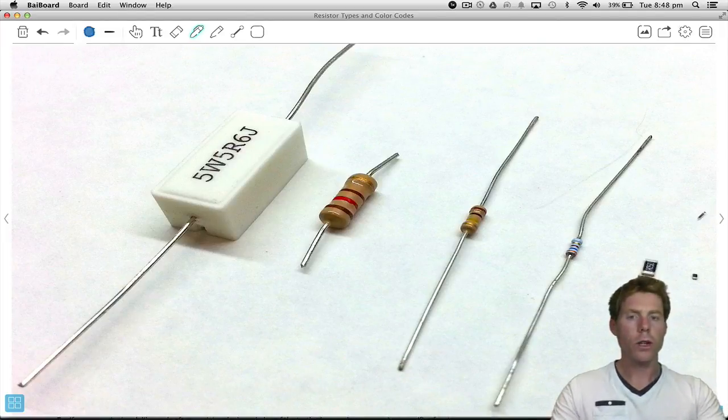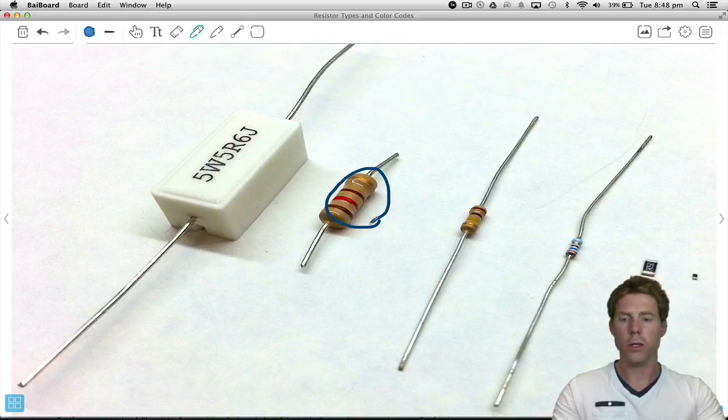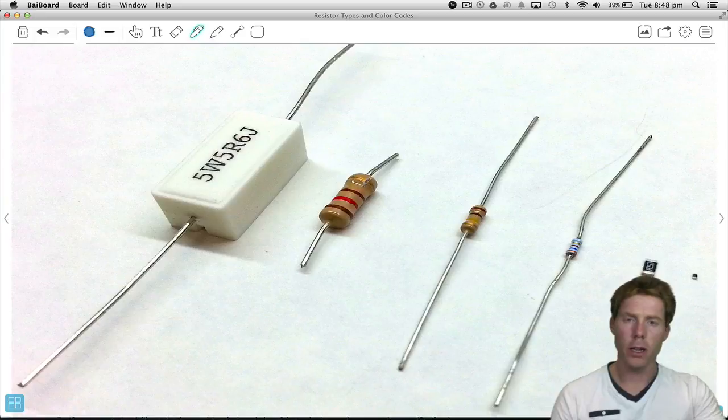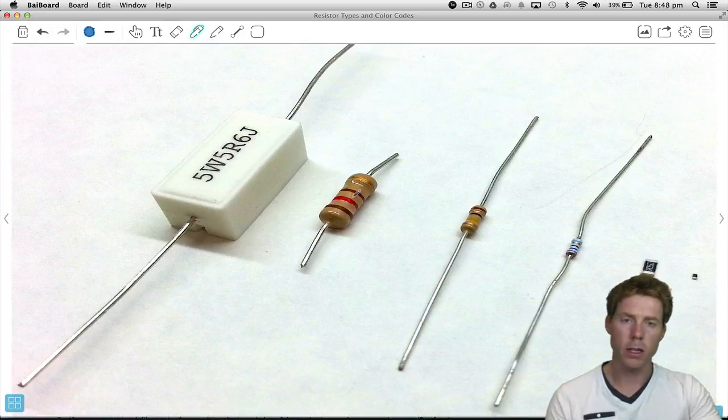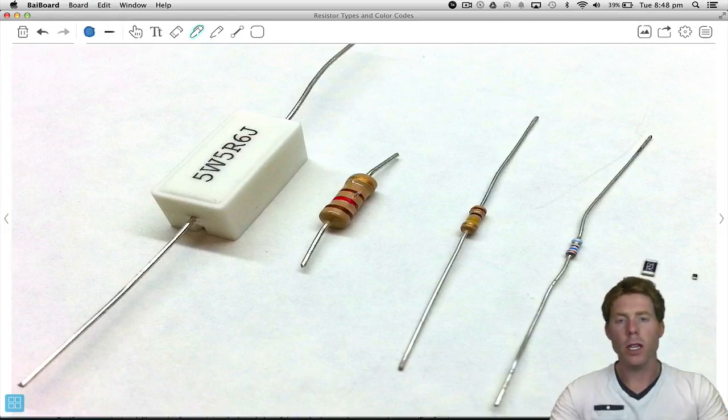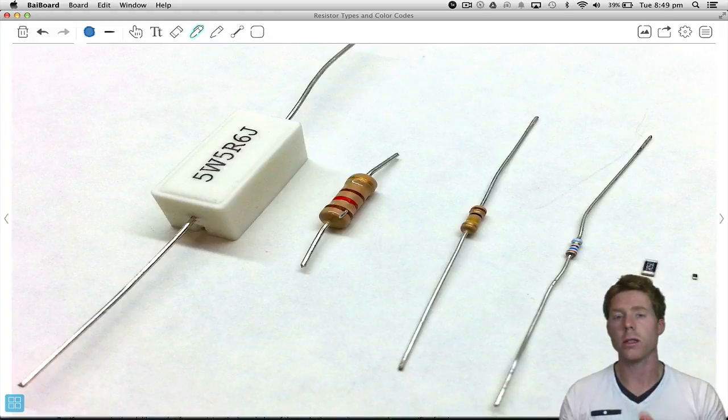What about these colors, though? What are all these about? So this one has brown, red, brown, and then a little way apart from that, as in spaced a little bit further than these other ones, we've got the gold band. So for this particular one, the first three colors represent the value of resistance. The last color represents the tolerance.